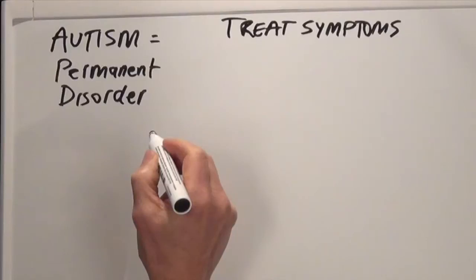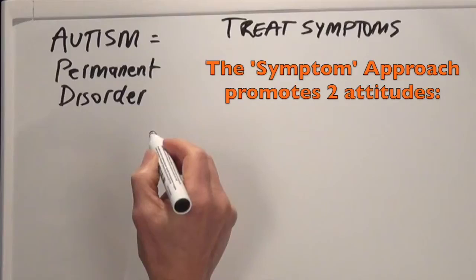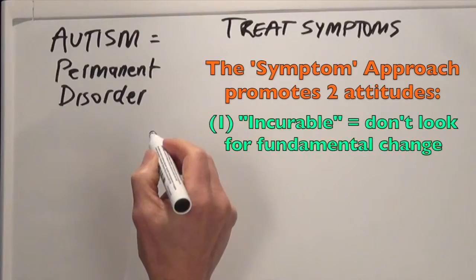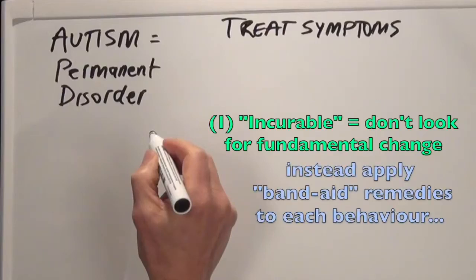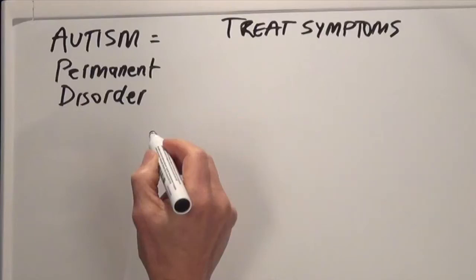The incurable disorder symptom approach, that is therapy one, promotes two attitudes. If autism is incurable, you don't look for fundamental change. You resign yourself to just applying band-aid remedies. And in my opinion, if you do that, you'll be unnecessarily limiting your child's future potential.